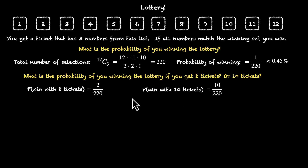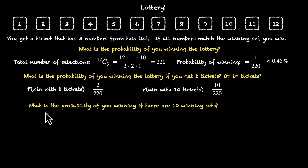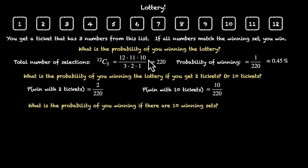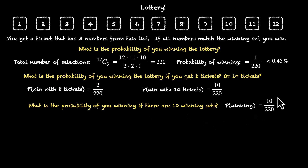Here's a different way of increasing our chances of winning. What is the probability of us winning if there are 10 winning sets? Suppose there are not one winning set but 10 winning sets. What's the probability of us winning if we get a ticket? Because there are now 10 winning sets, the probability of us winning is 10 divided by 220 — 10 favorable outcomes out of 220 total outcomes — which is approximately 4.5%.